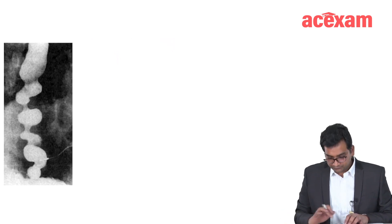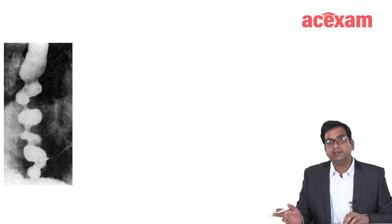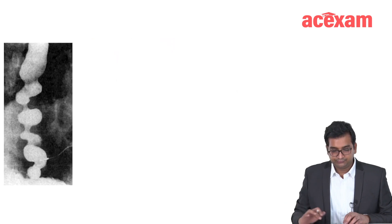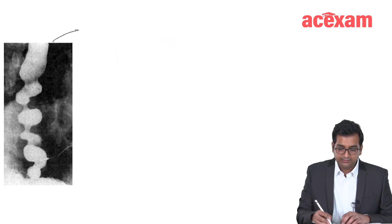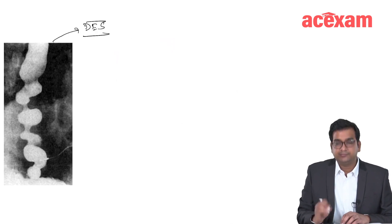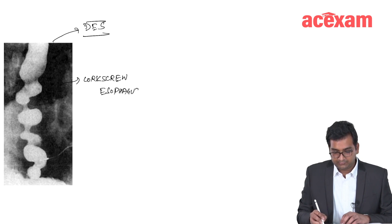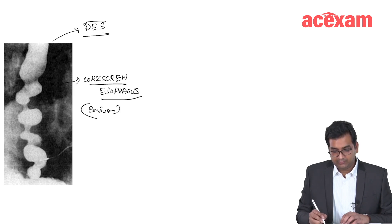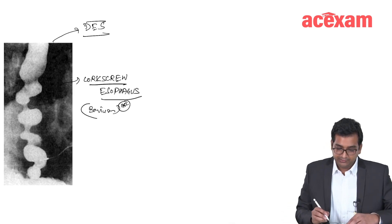If a patient presents with reflux, severe chest pain, and a corkscrew appearance on barium swallow, the diagnosis is diffuse esophageal spasm.